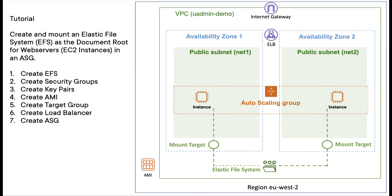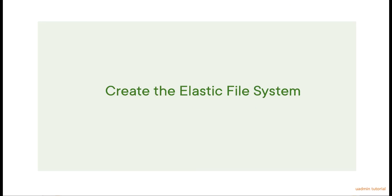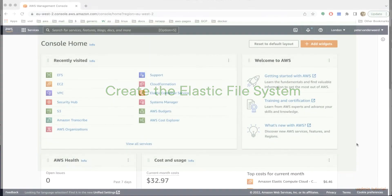Hello. In this tutorial we will create an auto scaling group which runs web servers based upon an AMI that we create ourselves, and use an elastic file system as the document root for the instances in the auto scaling group. In total that will be seven steps: creating the file system, security groups, key pairs for the instances, creating an AMI, a target group, a load balancer, and finally the auto scaling group itself. Let's start with creating the file system.